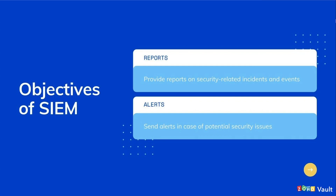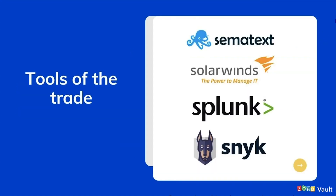There are two main objectives of every SIEM tool: reports and alerts. Reports provide security-related incidents and events such as failed logins or malware activity — basically any malicious activity. Alerts are sent in case of potential security issues so that you can fix them. These two main things are what SIEM's main objectives are.